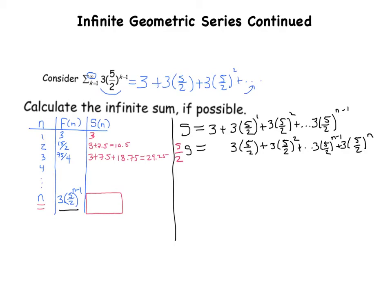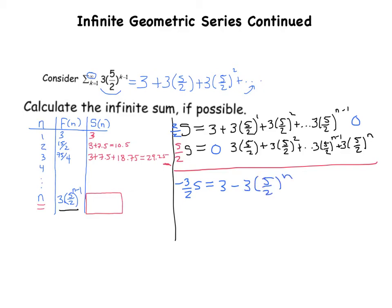And we subtract. It's really 1s, but it's useful to view it as 2 halves s, because then I can subtract the fractions. 2 halves s minus 5 halves s is negative 3 halves s. And that's going to equal 3 minus 0 here, which is 3, and 0 minus 3 times 5 halves to the n is negative 3 times 5 halves to the n. So let's multiply both sides by the reciprocal. The reciprocal of negative 3 halves is negative 2 thirds, so s equals negative 2 thirds times 3 minus 3 times 5 halves to the n.